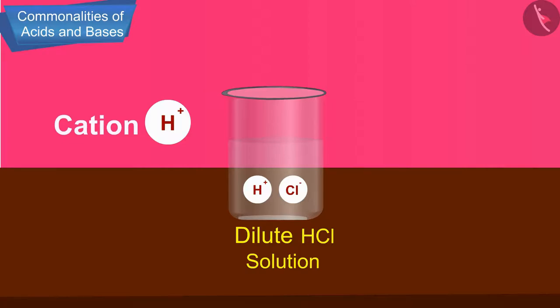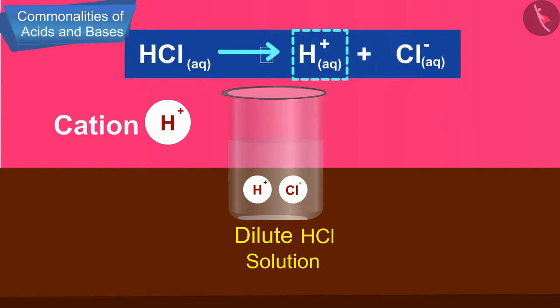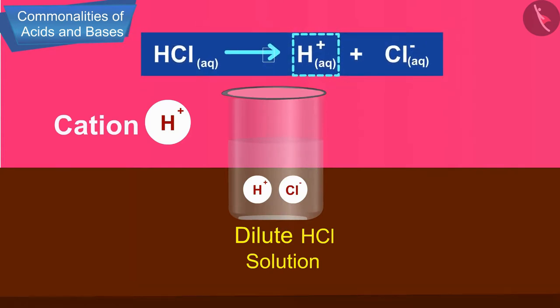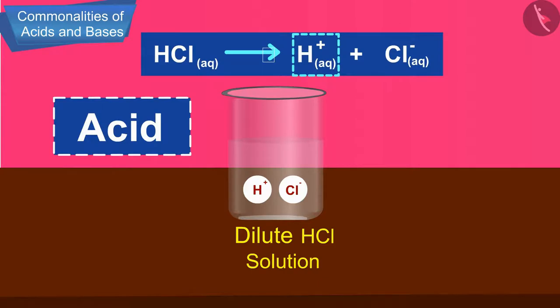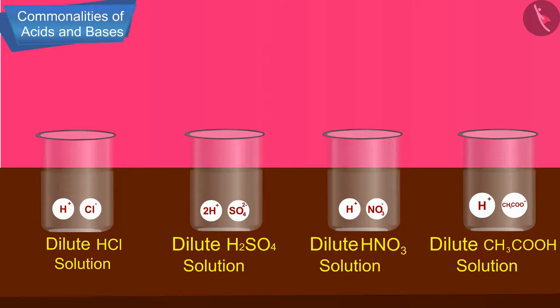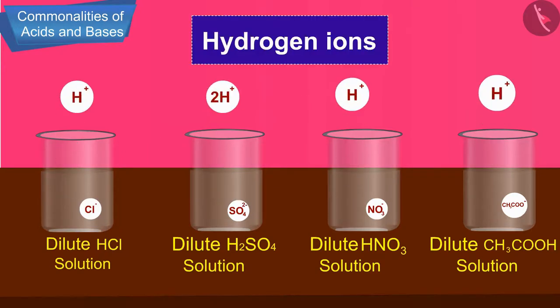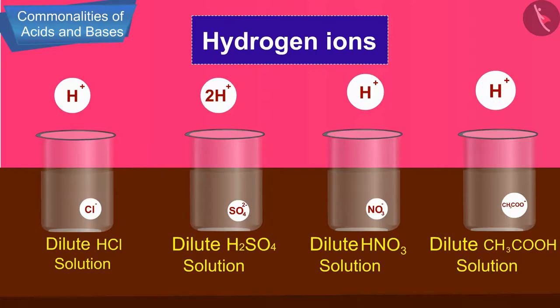So we can say that an acid is a substance which dissociates on dissolving in water to produce hydrogen ions or H+ ions. So the common thing in all the acids is that they produce hydrogen ions when dissolved in water.